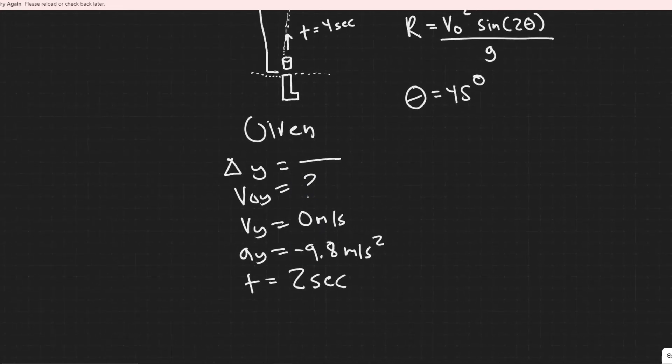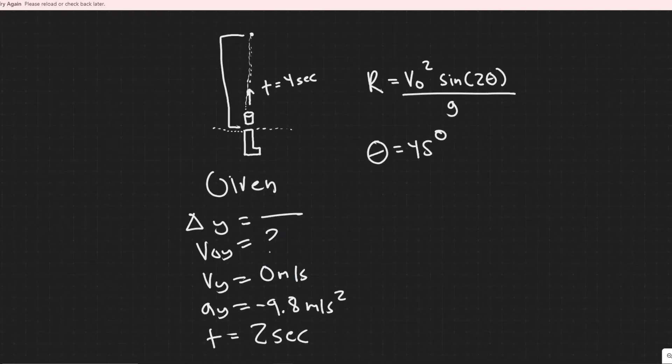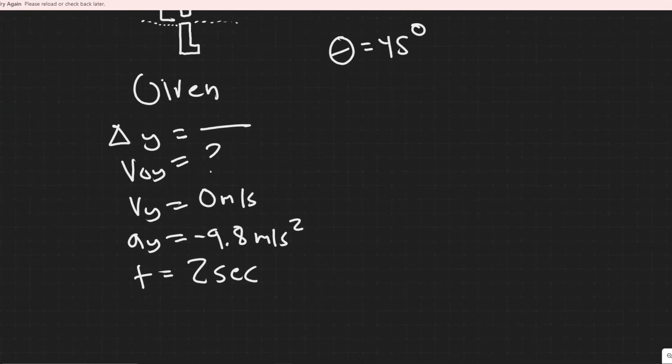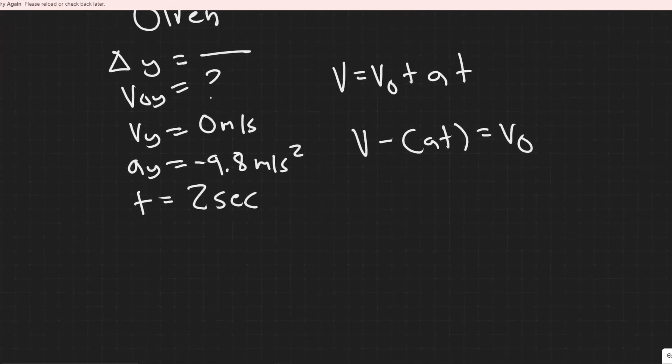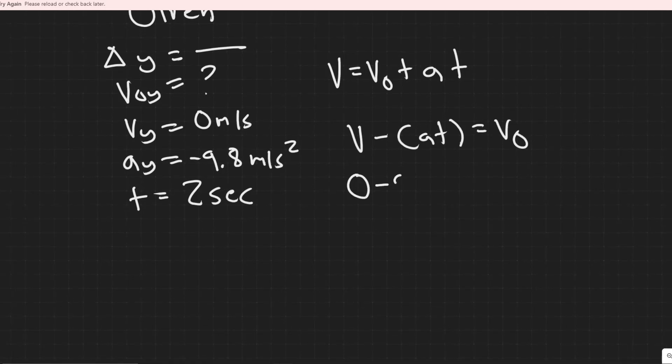Now to find the initial velocity that we're going to plug into this formula, we're just going to use one of the kinematic equations. You can either Google it, or hopefully you have memorized. But the equation we're going to use is this one right here. v equals v sub 0 plus a times t, where v is the final velocity, v sub 0 is the initial, and then you have acceleration times time. We obviously want the initial, so we have basically v minus a times t equals v sub 0. It's just a matter of plugging it in now. You have 0 minus minus 9.8 times 2. And then you want to multiply that out.